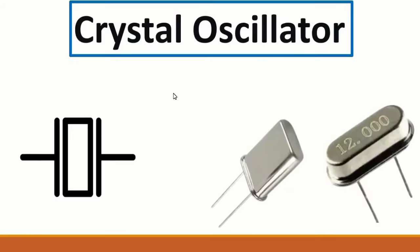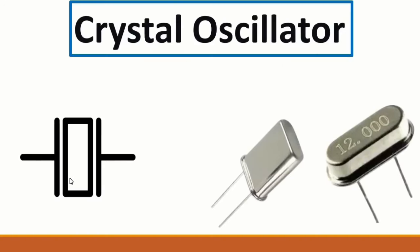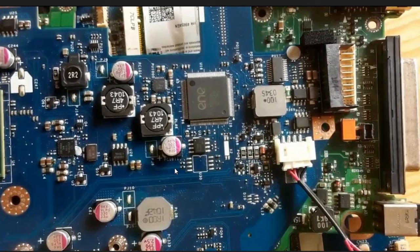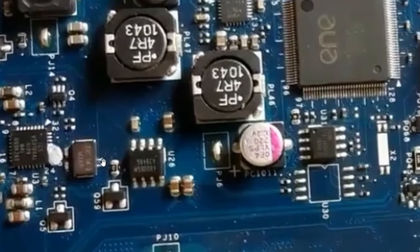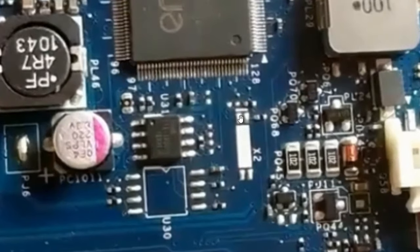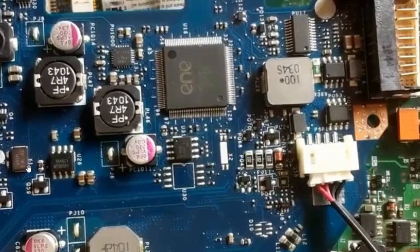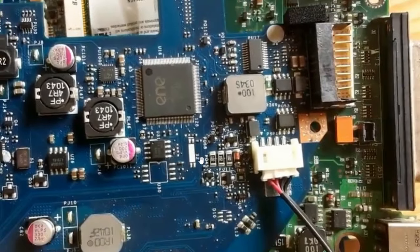Next we have the crystal oscillator - this is its symbol. On the motherboard, the reference for a crystal oscillator could be 'Y' or 'X'. Here we have crystal oscillator X2 and also Y1. Without the crystal oscillator, the motherboard cannot work properly.